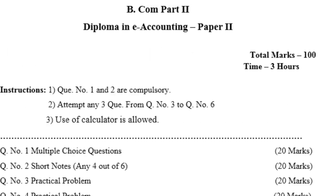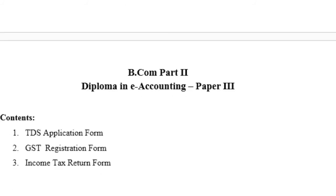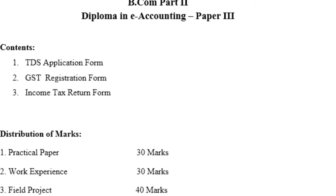This is the nature of the question paper for Diploma in Accounting paper number 2. Paper number 3 is practical-based, covering TDS application forms, GST registration forms, and income tax returns. The distribution of marks for paper 3 out of 100 is: 30 marks for practicals, 30 marks for work experience, and 40 marks for the field project.